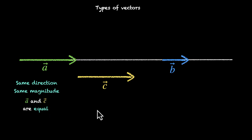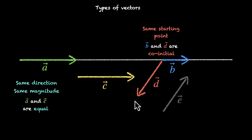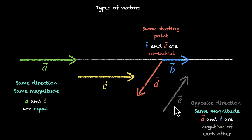Another example is when two vectors have the same starting point. Let's say we have vector D, and D and B have the same starting point — when two vectors have the same starting point, they're called co-initial vectors, because the initial point is the same. Another example would be opposite direction: if D and E are facing opposite directions — D is facing this way and E is facing that way — and they have the same magnitude, then we call these two vectors the negative of each other. E vector is the negative of D vector, and they both cancel each other out.